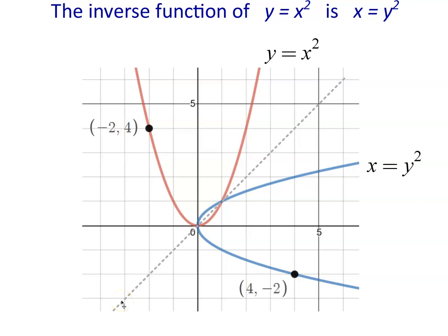And if you notice the coordinates right here, the coordinates of that point are negative 2, 4, and the corresponding point in the inverse function is 4, negative 2. So basically what's happened is we've just swapped the x and y coordinates.